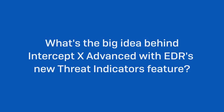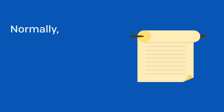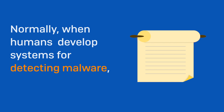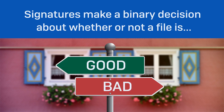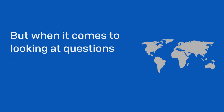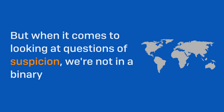The big idea behind threat indicators is that normally when humans develop systems for detecting malware, they write rules, also known as signatures, that make a binary decision about whether or not a file is good or bad. But when it comes to looking at questions of suspicion, we're not in a binary world anymore.